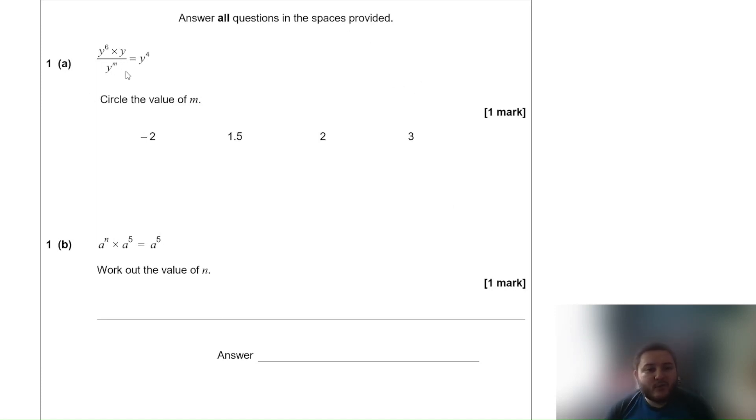So y to the power of 6 times y over y to the power of m is equal to y to the power of 4. Circle the value of m. Well y to the power of 6 times y is going to be y to the power of 7. Now when you divide two base numbers raised to a power then you subtract the powers. So what we are basically saying is that 7 take away m is equal to 4. So m has got to be 3.